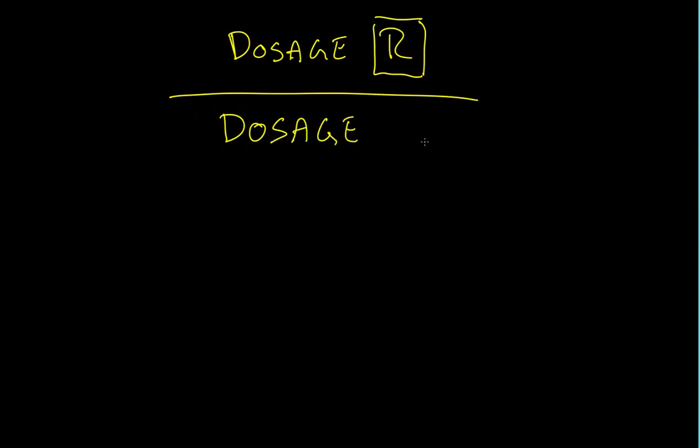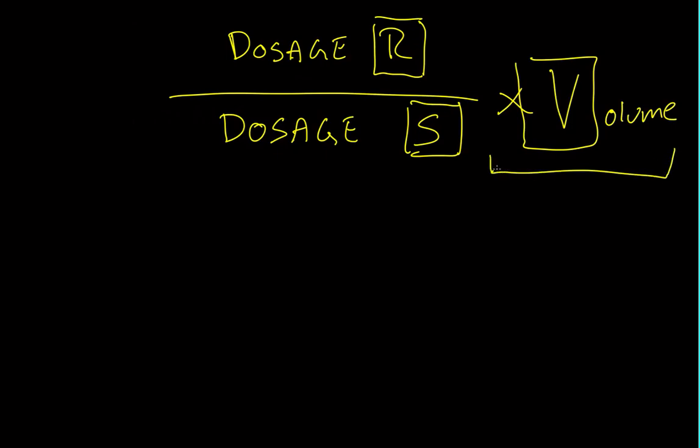The best way to remember it is you have your dosage required or requested over your dosage on hand or supplied. So we'll call it S, dosage supplied, and then times volume. But with this part of the equation, you only need to worry about that if it's actually asking you a unit of volume. If it's saying that there's one milligram per five milliliters, then this part of the equation comes into play. If not, if you're just working with purely tablets or units of the same measurement, you're just going to worry about this part of the equation.